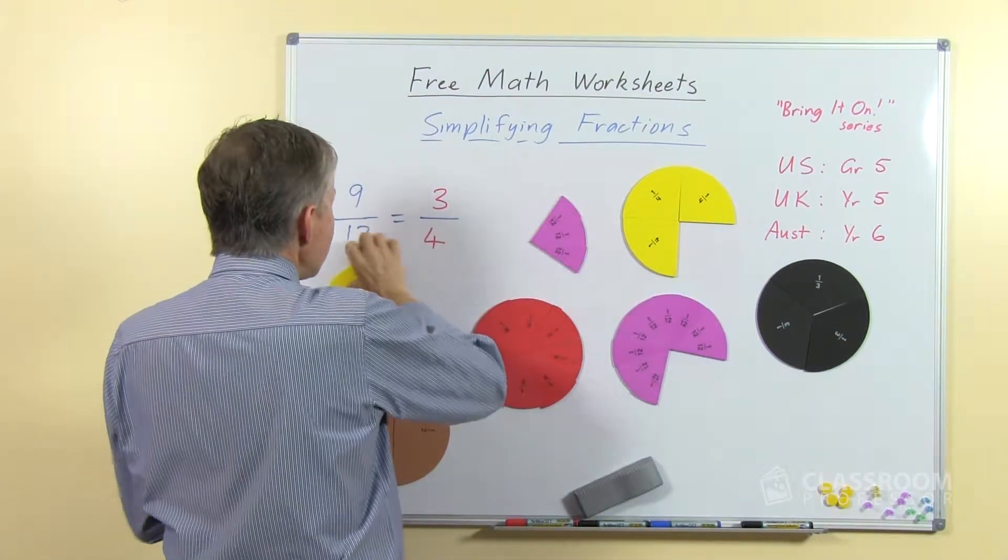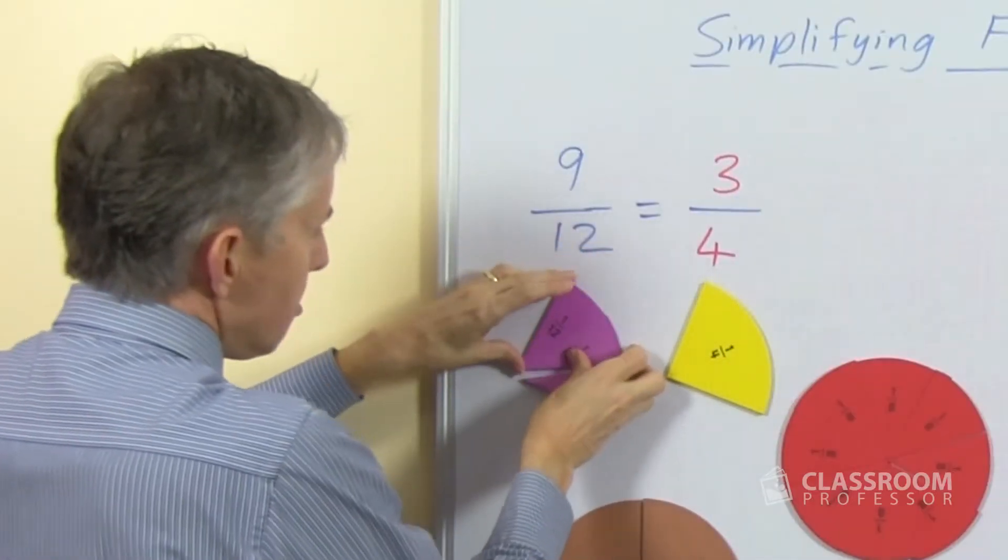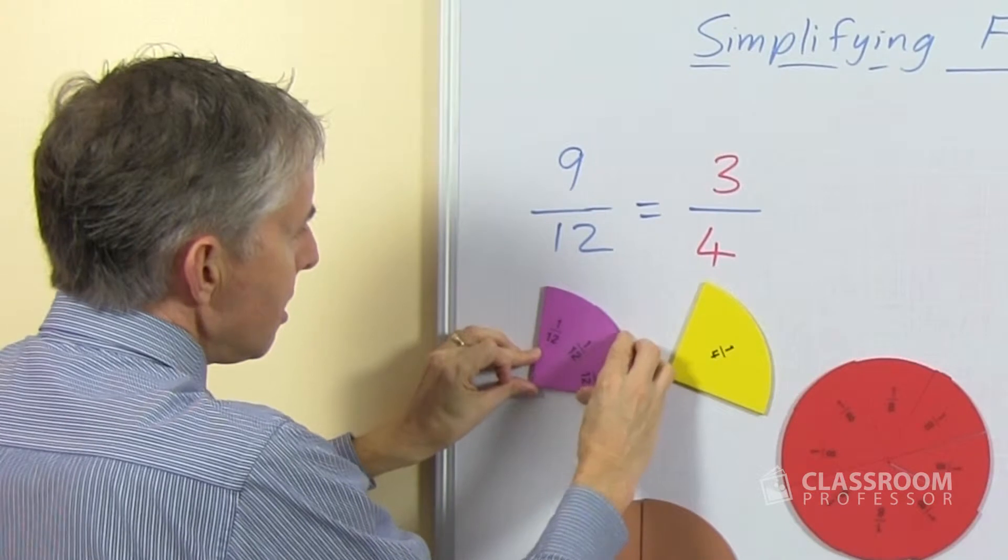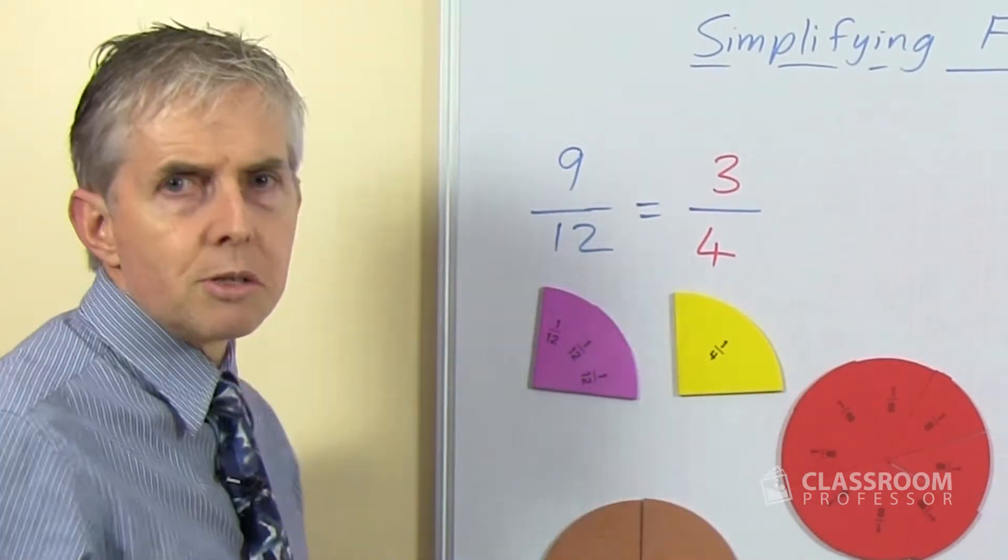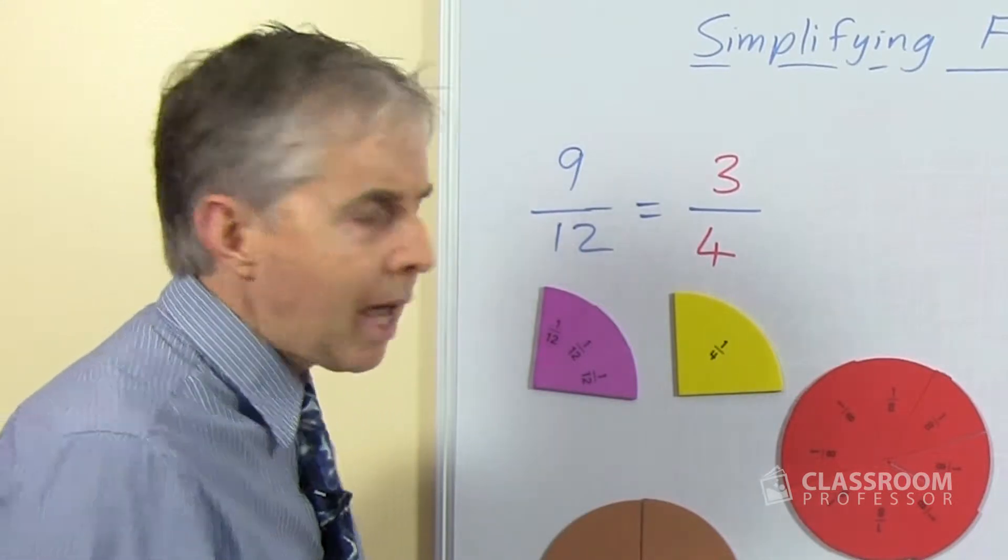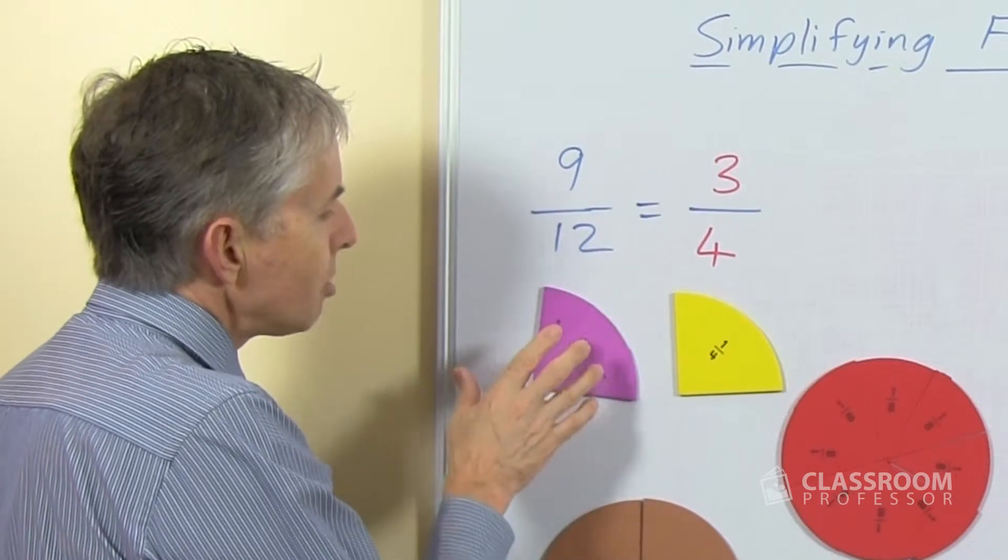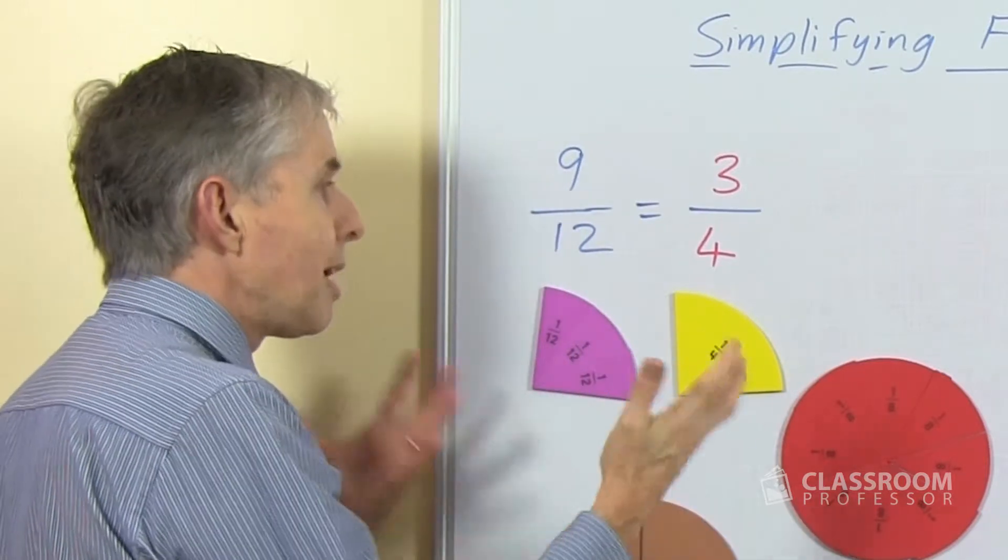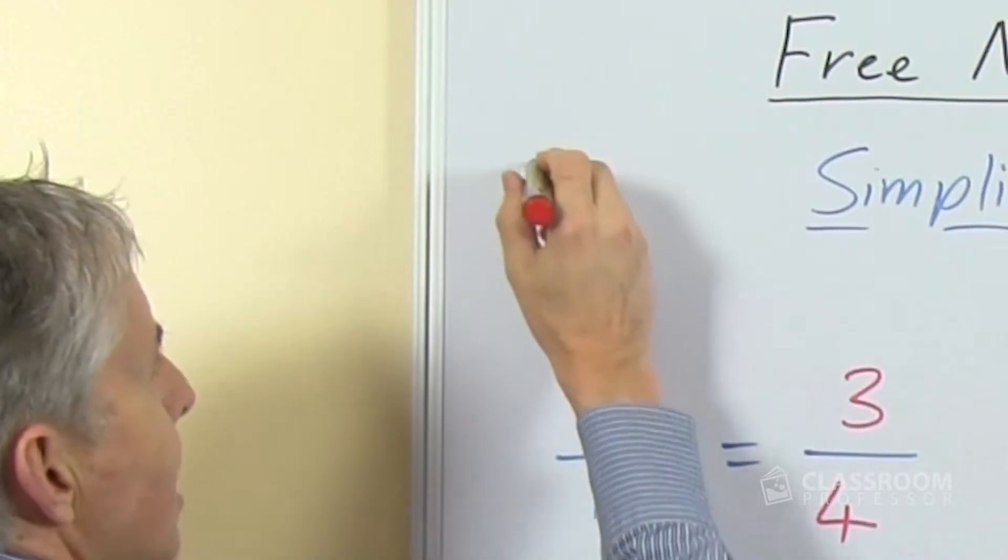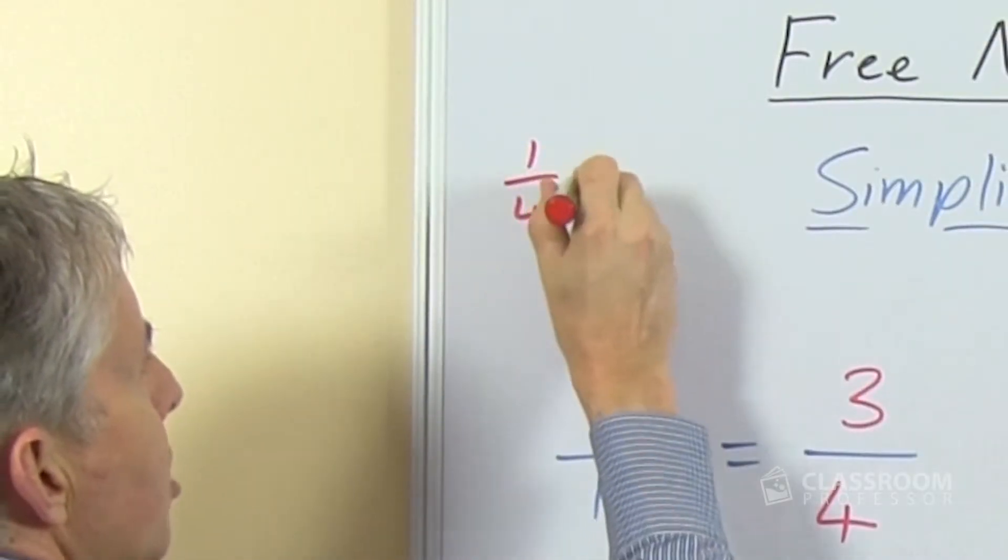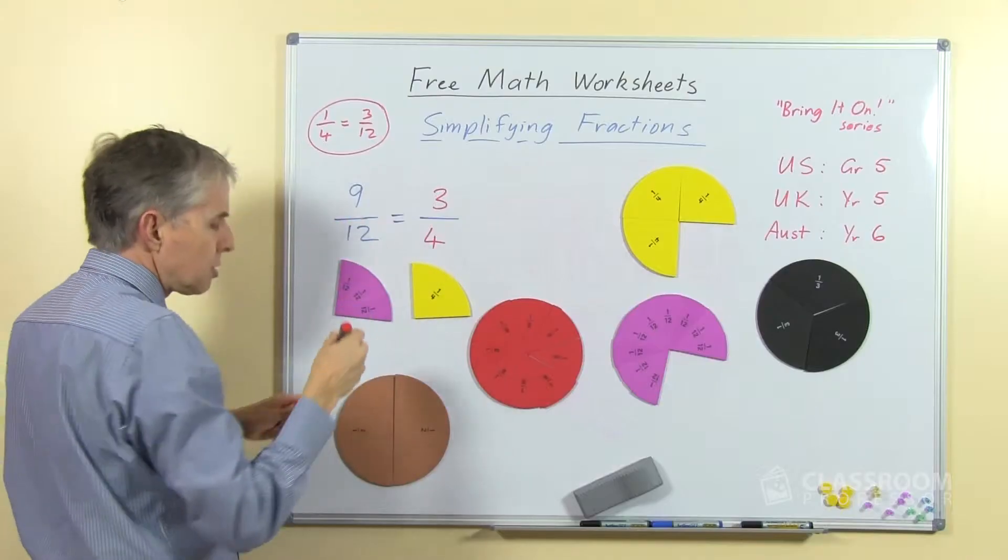So we could just look at one quarter and a number of twelfths and of course see that that is equal to three twelfths and ask the students what they notice, what's the relationship here? How can we understand this process? So we would want them to see that there are three twelfths that's the same as a quarter and oh look, there's a relationship between the four and the twelfth. So if we have one quarter equals three twelfths and that's an idea that the students could understand.